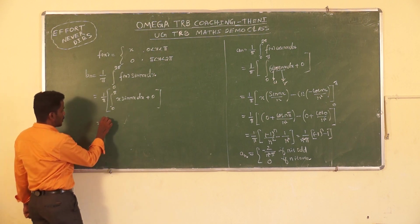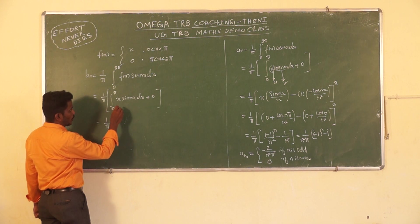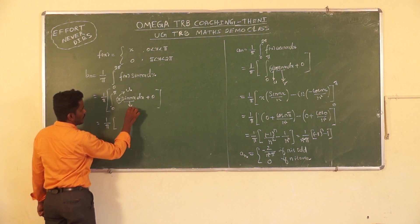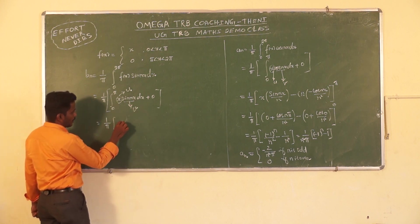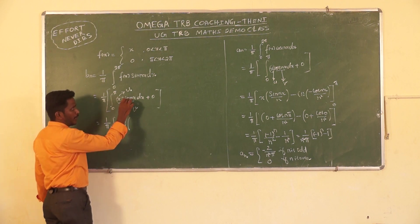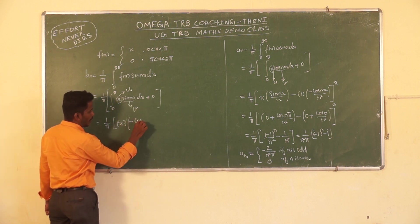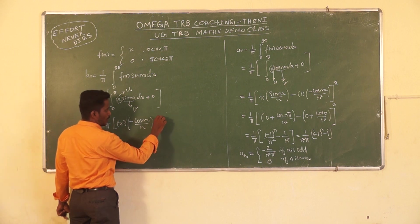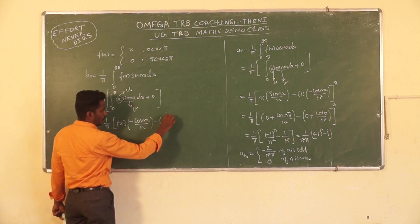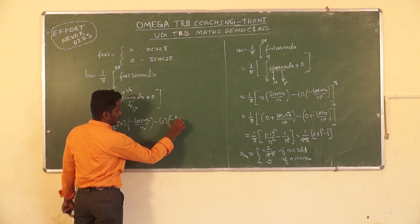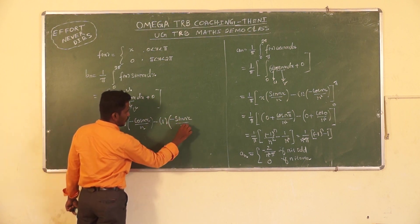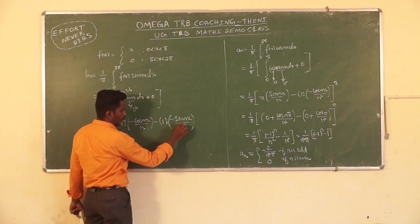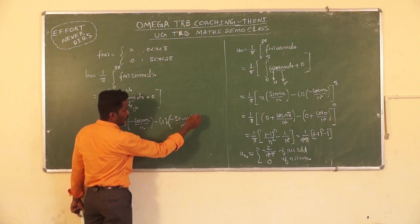Using the Bernoulli (u-v) rule for integration by parts: u = x, v₁ = −cos(nx)/n. Then u·v₁ minus u′·v₂, where u′ = 1 and v₂ = −sin(nx)/n². So we get minus cos(nx)/n and minus sin(nx)/n².